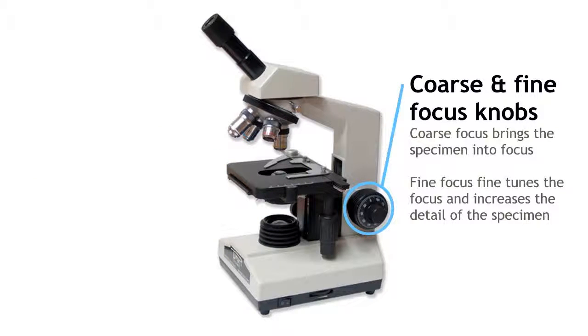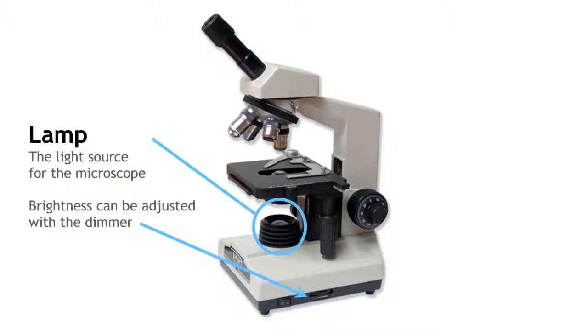The coarse and fine focus knobs move the stage towards or away from the objective lenses depending on which way it is turned. The coarse focus knob brings the specimen into focus. The fine focus fine tunes and increases the detail of the specimen.